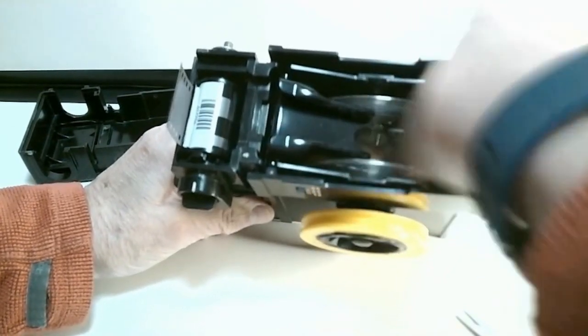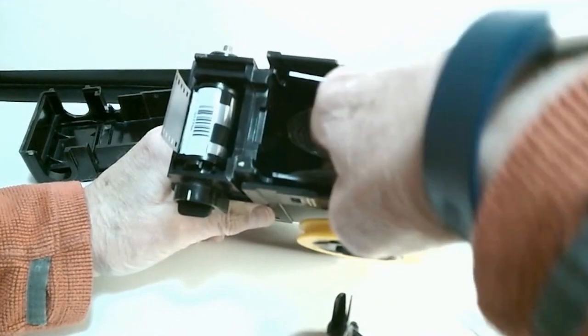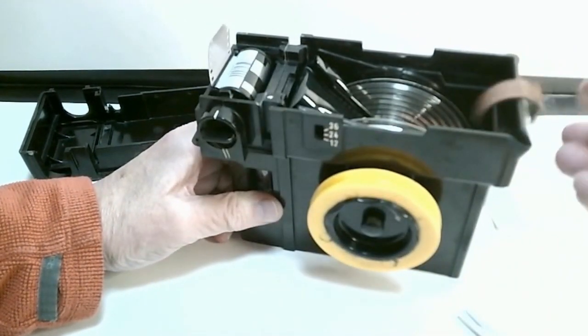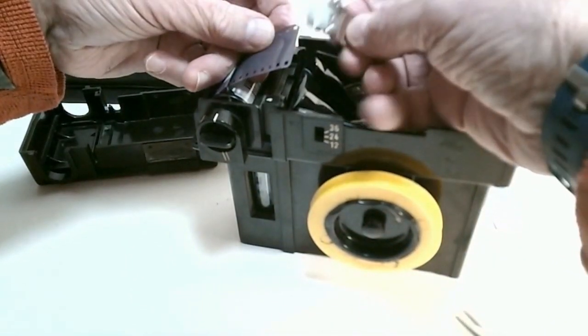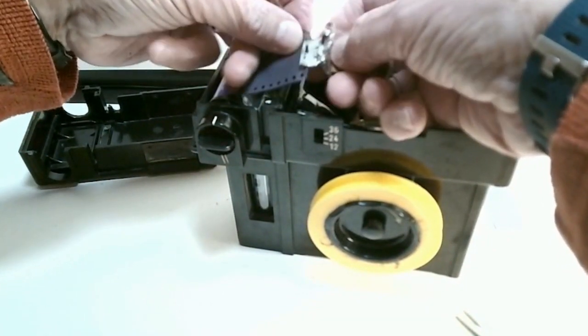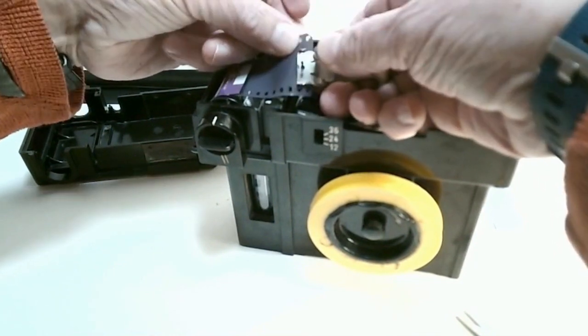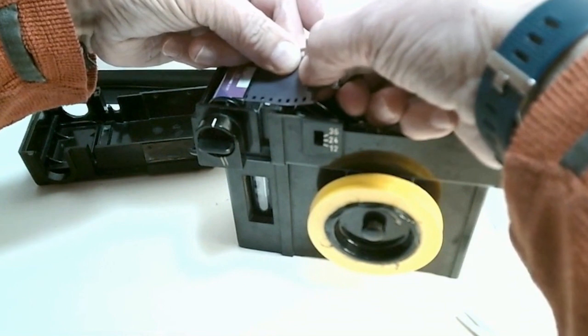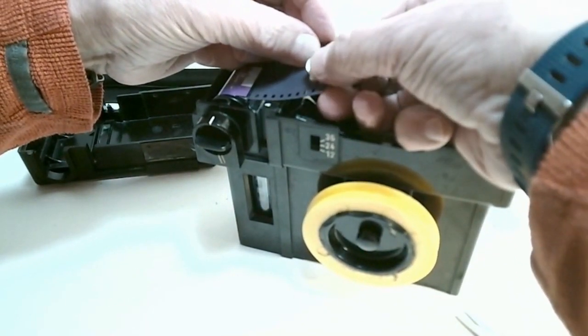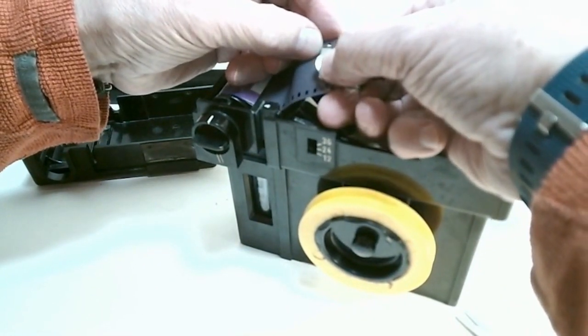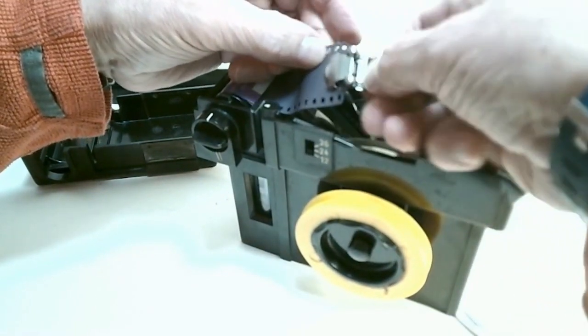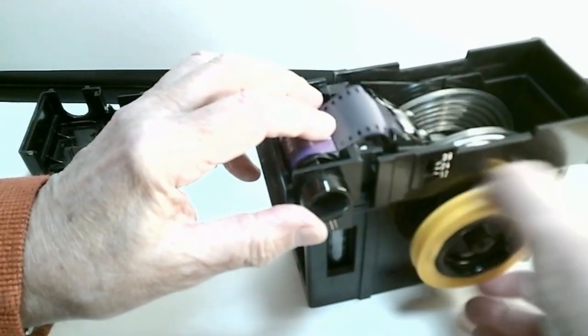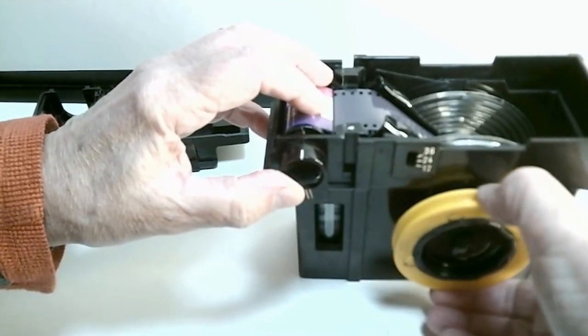So first of all I'll lift the guide out so I can get the puller that pulls the film onto the tank spiral. The process is quite straightforward. This clip clips onto the end of the film there. I like to make sure it's nice and central.